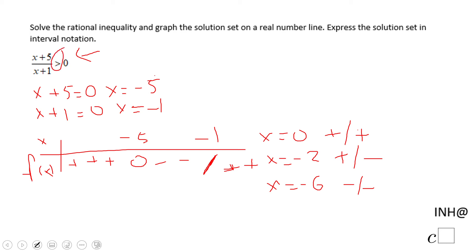And look into our original problem, which says greater than 0. We have the intervals for which this rational function is greater than 0. That will be negative infinity to negative 5, union negative 1 to infinity, and the union sign here in case you need it.